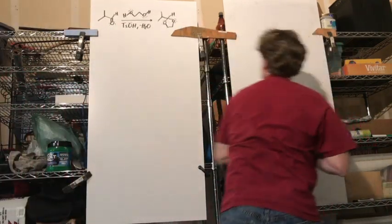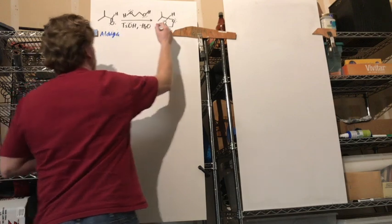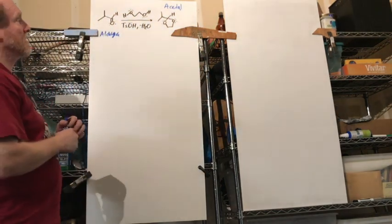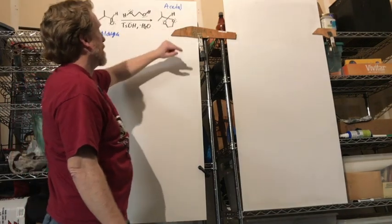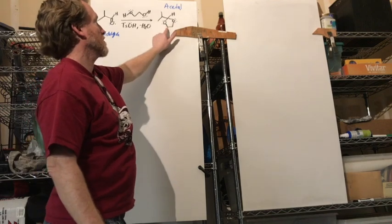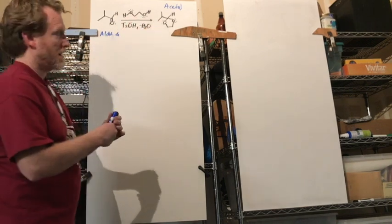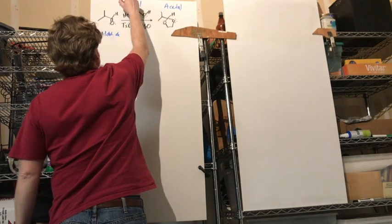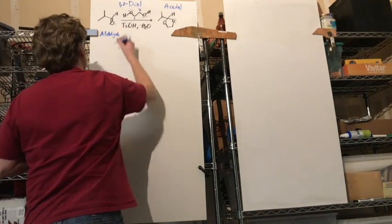Second acetal example: an aldehyde reacts with a 1,2-diol (not two separate ethanol molecules but one molecule with two alcohols) plus TsOH with water removal. To identify an acetal: look for a carbon with two oxygen atoms attached — both oxygens on the same carbon, each connected to an sp3 carbon. This is a 1,2-diol, giving a cyclic acetal. The mechanism is acidic again.